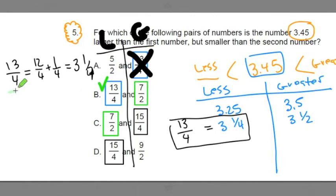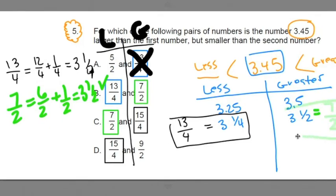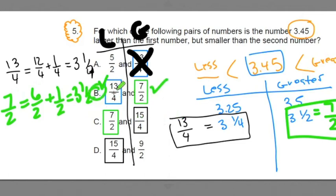Let's evaluate the next fraction. 7 over 2 is equivalent to 6 over 2 plus 1 over 2. That's like 3 and a half. Well wait a second, 3 and a half, that's greater than. So 7 over 2 falls under our greater than. And look, we just found a double match. We found out that 13 fourths is less than the 3.45 and 7 halves is greater than. B in fact is the answer. The first number is less, the second number is more.